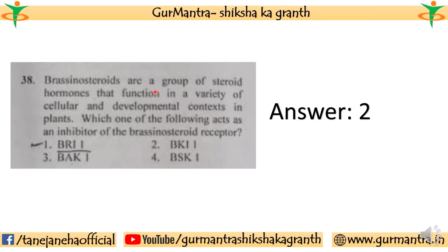Question 38: Brassinosteroids are a group of steroid hormones that function in a variety of cellular and developmental contexts in plants. Which one of the following acts as an inhibitor of the brassinosteroid receptor? The correct answer is the second one.